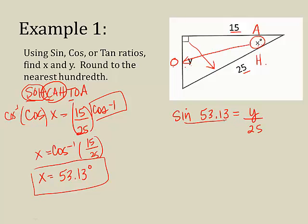To simply find y, I'm just going to cross-multiply. So, y is equal to 25 times the sine of 53.13. And type that in your calculator.